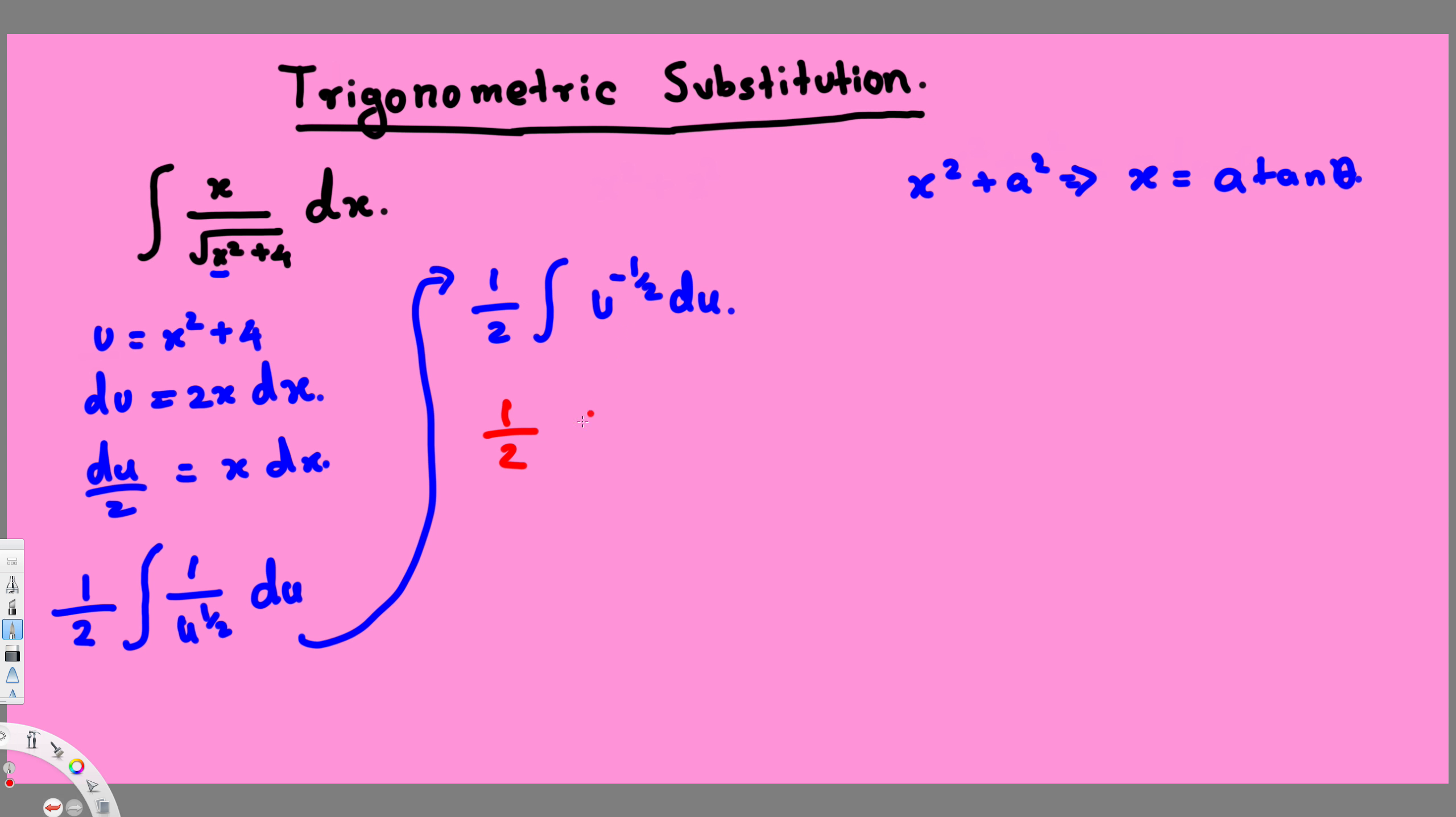Now if I do the integration, this is going to give us half, and then we have to add one more to the power. That's going to give us u power positive half, and we have to divide by this power. So we're going to divide by 1 over 2. This 2 goes to the top, so 2 over 2.